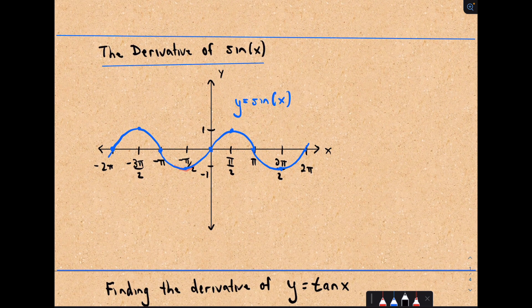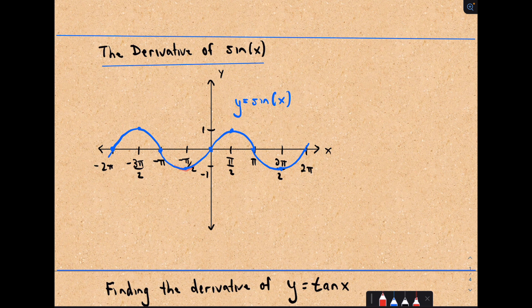Let's talk about the derivative of sine x. I've got the graph of sine x here—regular old sine x. If we want to think about the graph of the derivative, notice at negative 3π/2, negative π/2, positive π/2, 3π/2, et cetera, the slopes of the tangent lines on sine x will all be zero.